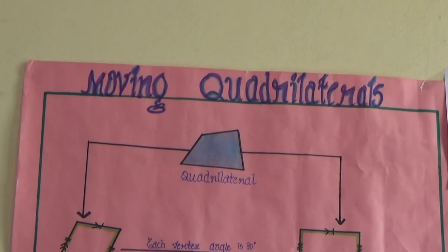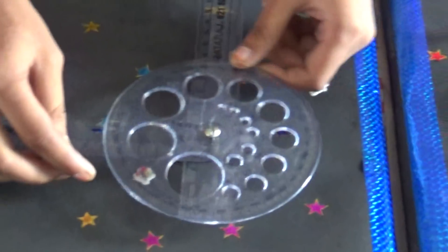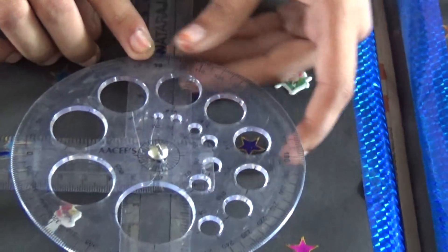Rectangle is a special type of parallelogram whose angles are right. In a rectangle, each angle is equal to 90 degrees. Here you can observe, 0 to 90 degrees.